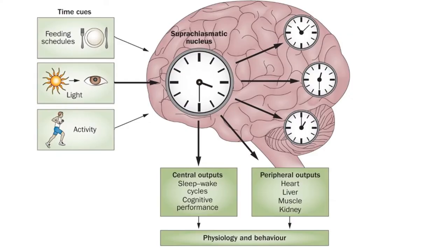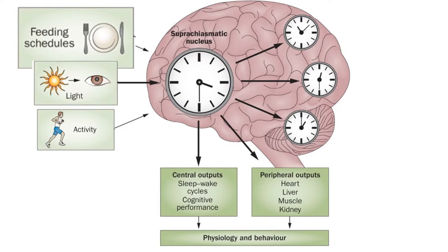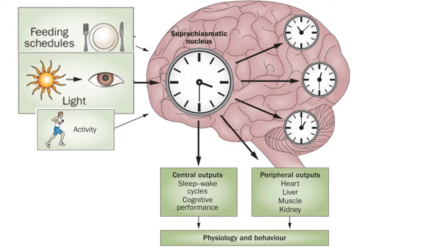Feeding schedule affects our internal clock. On awakening, if we eat a hearty breakfast, we are more alert, and we should eat dinner two or three hours before our sleep time to have a good night's sleep. Daylight exposure, especially outdoor exposure early in the morning, is very important. Bright light exposure at night will delay our sleep time.